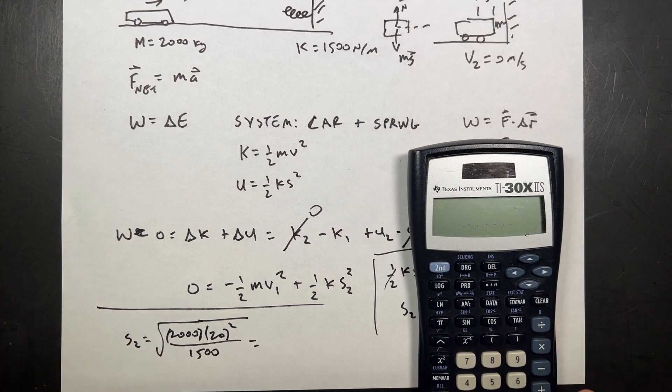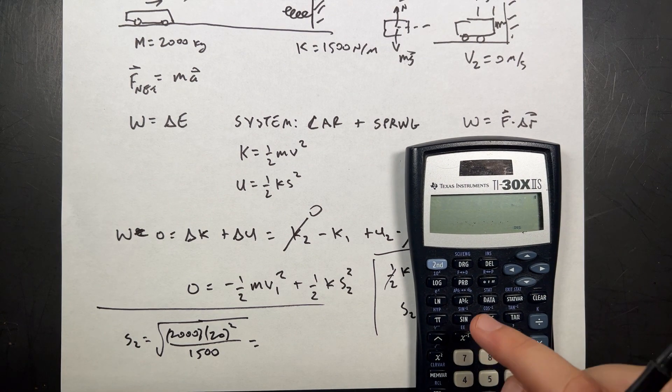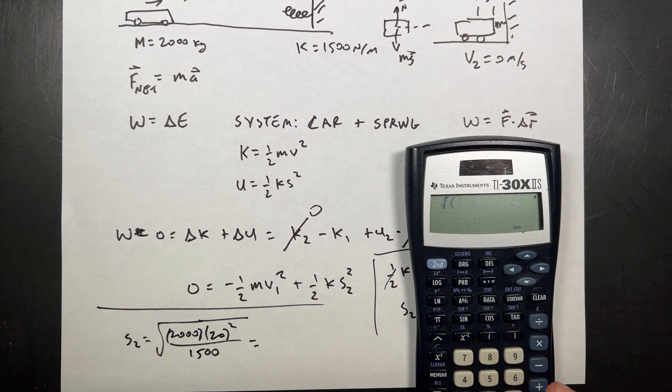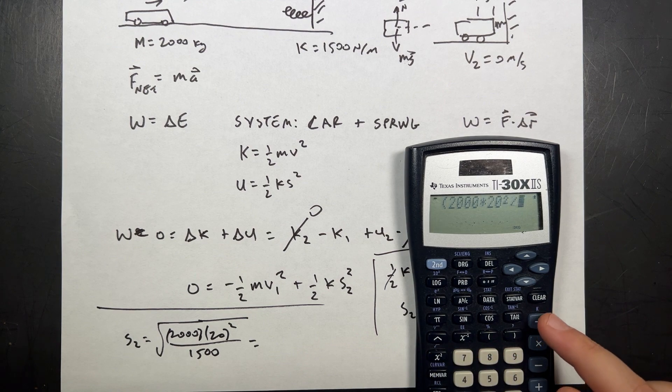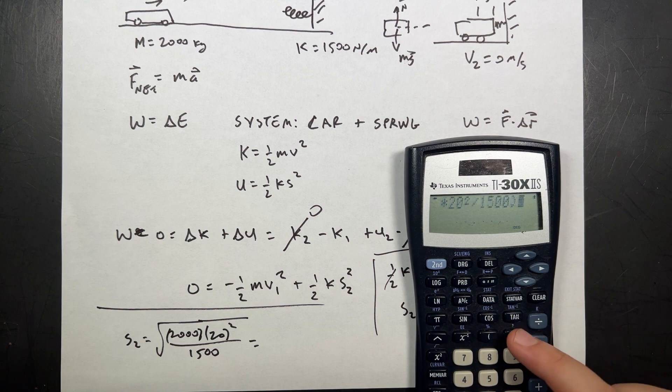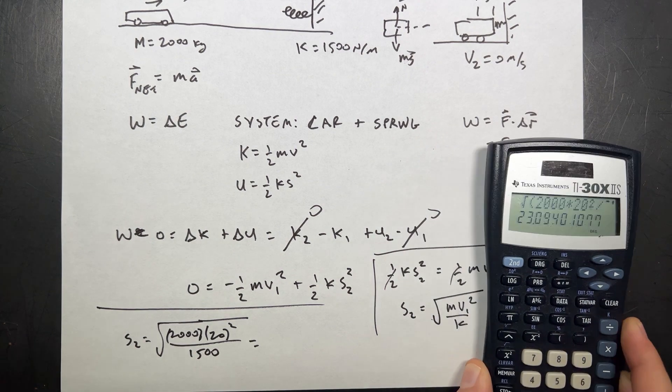And let's put that in our calculator. Move it so you don't see reflection. Let's put that in our calculator, square root of 2,000 times 20 squared divided by 1,500 close parentheses. And I get, oh, 23 meters.